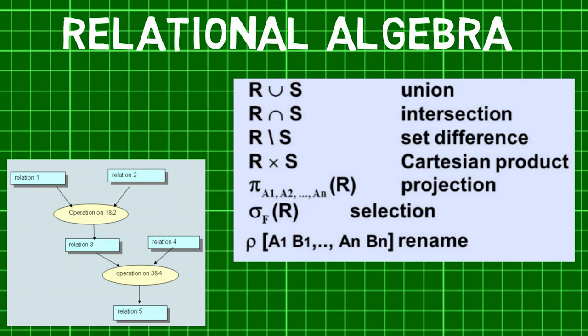Third is the union operation which performs binary union between two given relations. Fourth is the set difference operation. The result of set difference query is tuples which are present in one relation but are not in the second relation.